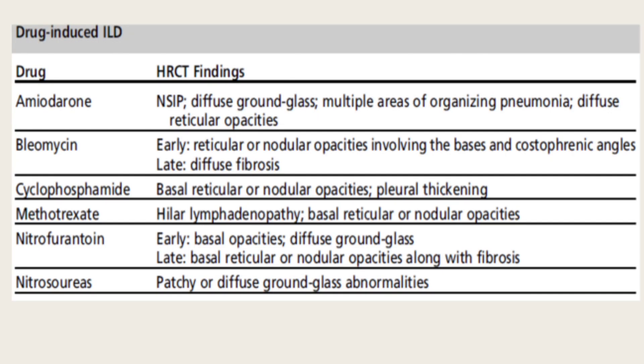Drugs that cause ILD include amiodarone, bleomycin, cyclophosphamide, methotrexate, and nitrofurantoin. Ask about cardiac history and amiodarone use, and about recurrent UTI where nitrofurantoin is frequently prescribed. When ILD is suspected, perform chest X-ray, CT scan, and a full PFT panel to assess physiological impairment, then start treatment. Establishing an etiology is very important — only if no cause is found should it be called idiopathic interstitial lung disease.